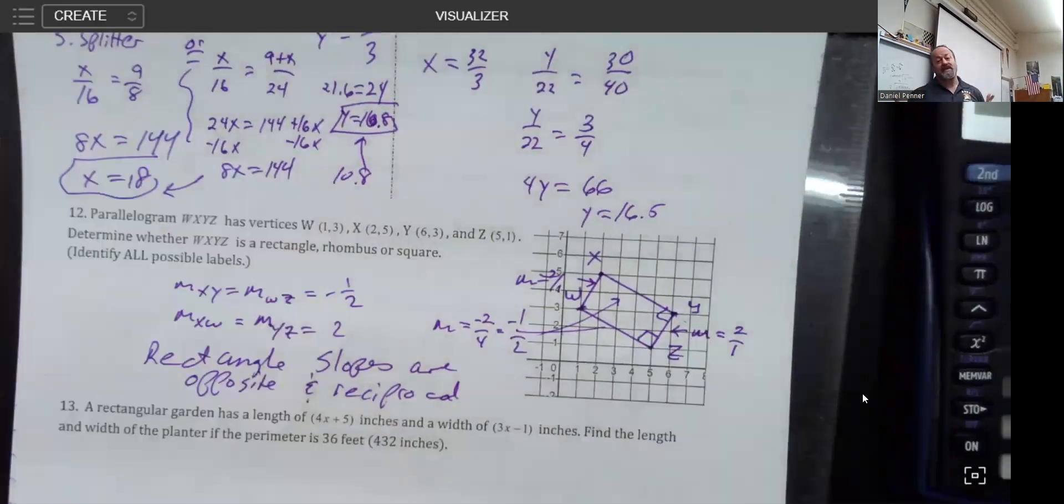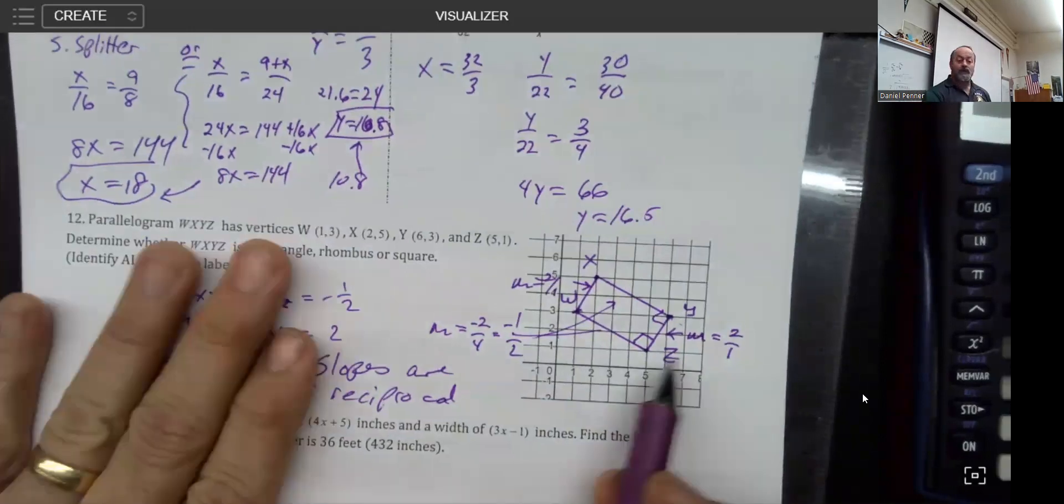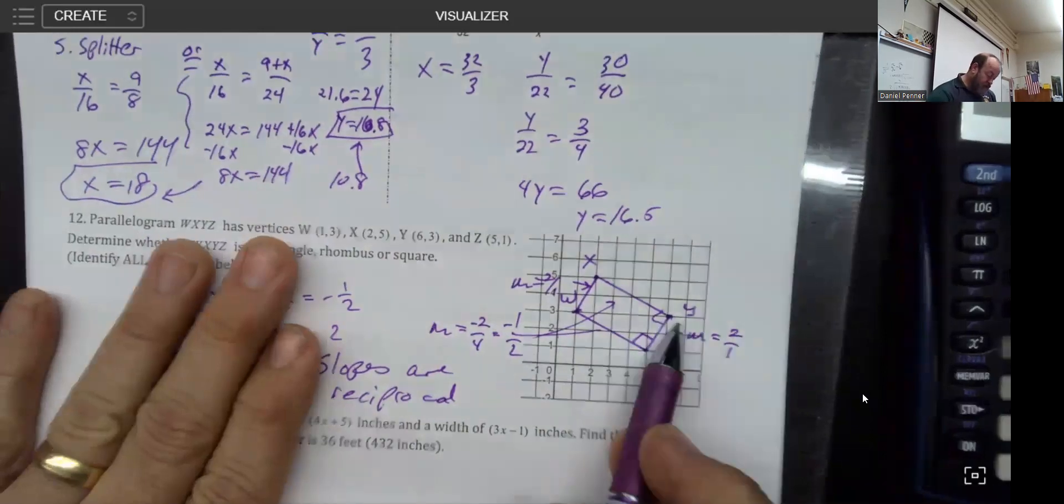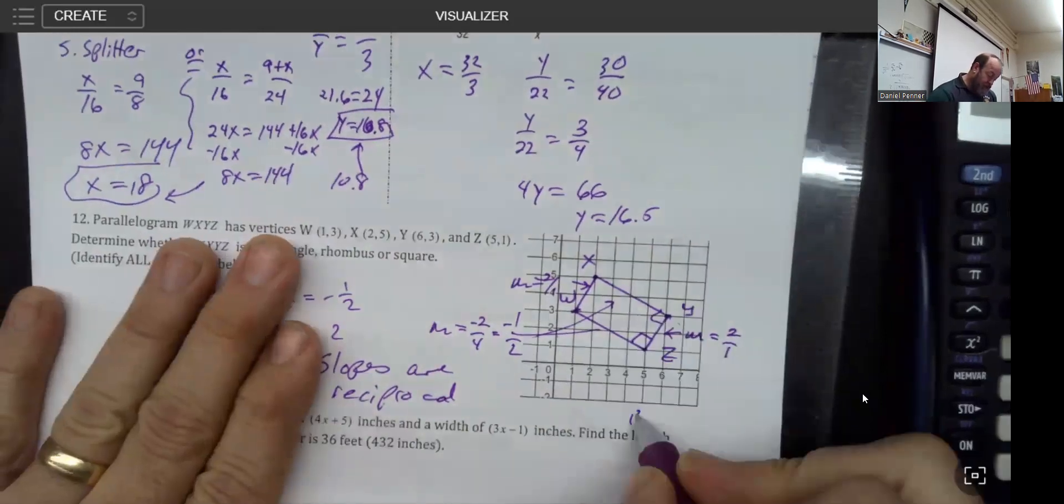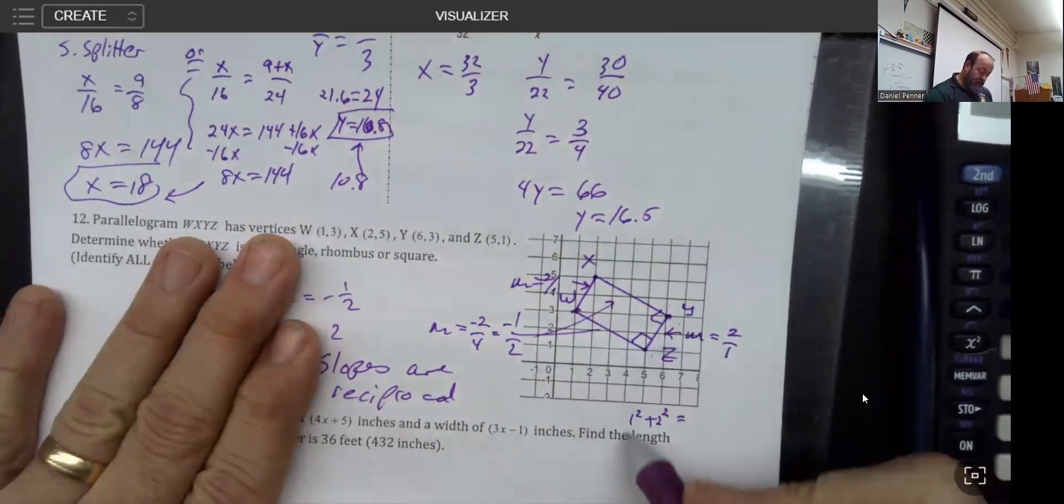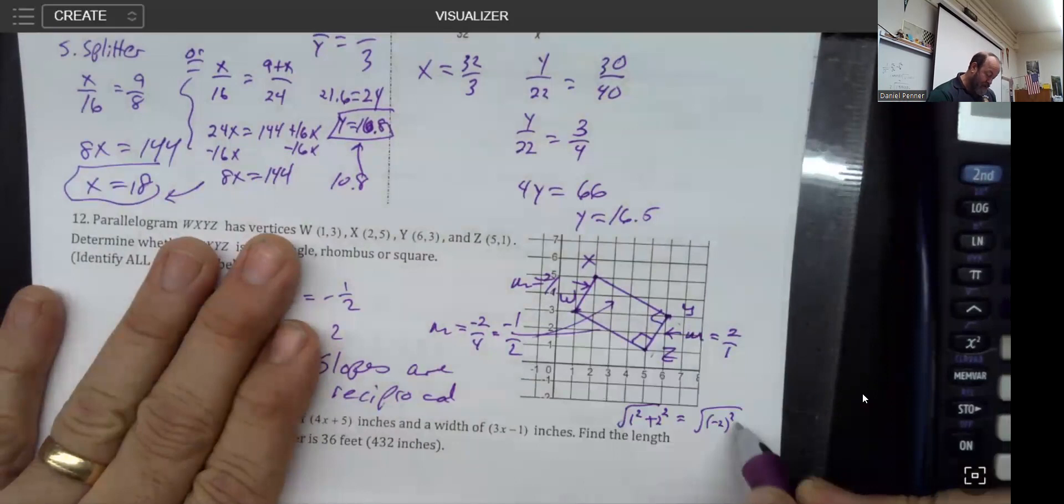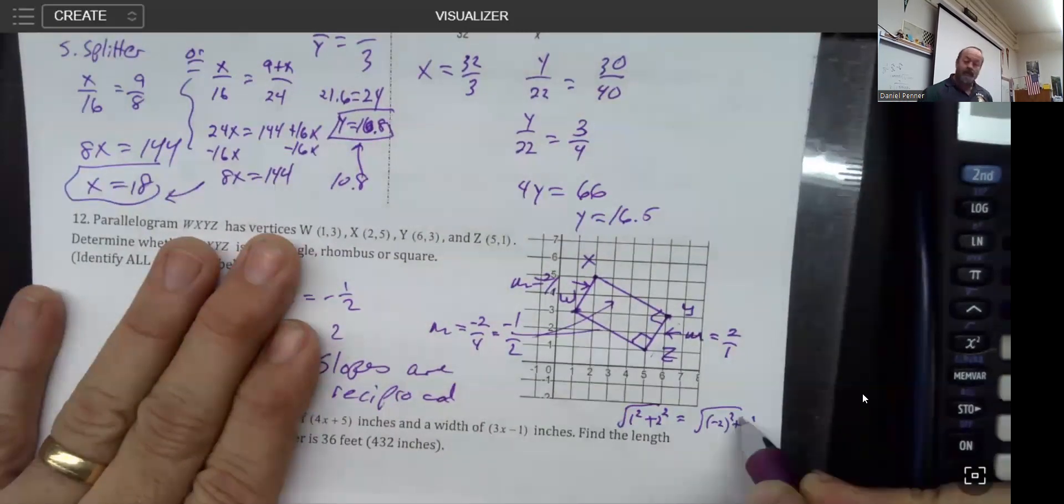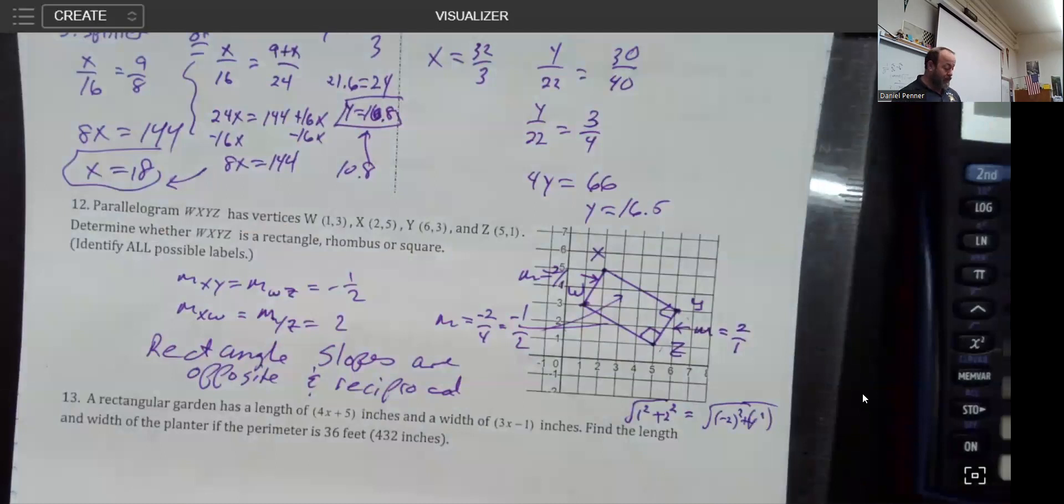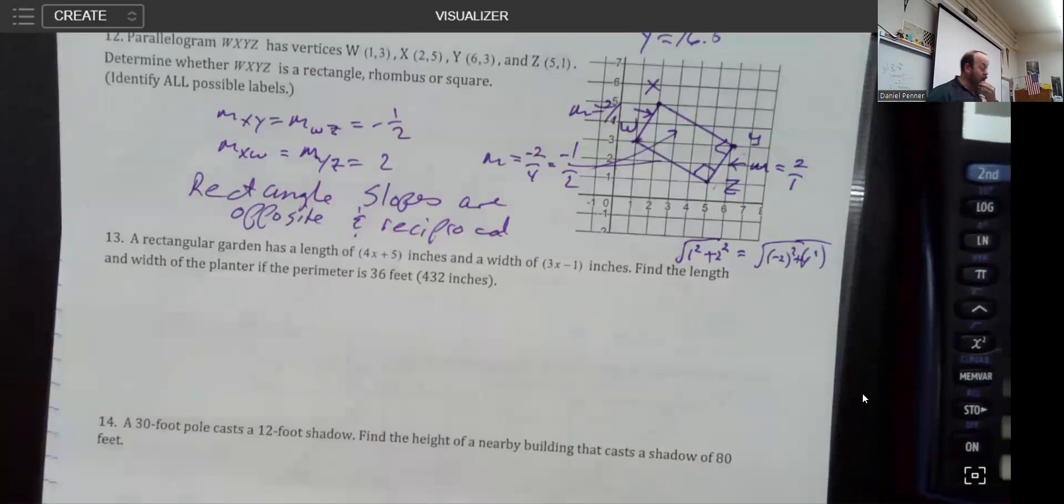The last little piece is we could establish that it is definitely not a square. Because if it rises 1 and runs 2, you could say that 1 squared plus 2 squared, that would be the distance here square rooted. But that would not be the same as this distance here because it drops 2 and then runs 4. Those are bigger numbers. If we did the Pythagorean theorem on both, I would get different values.